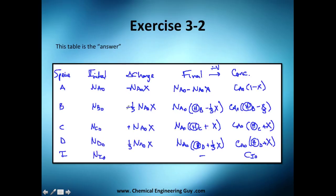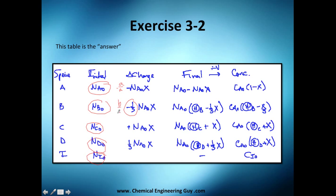Let's calculate the stoichiometric table. The initial amounts are given as variables. For the changes: species A changes by negative X_A — the stoichiometric coefficient is one. For B, it's minus one-third X_A (since b/a = 1/3). Remember, A is 3 and B is 1, so minus one-third.